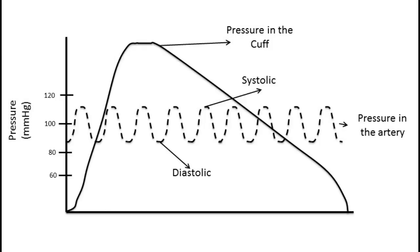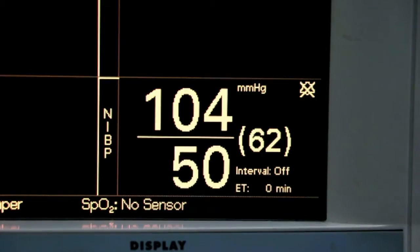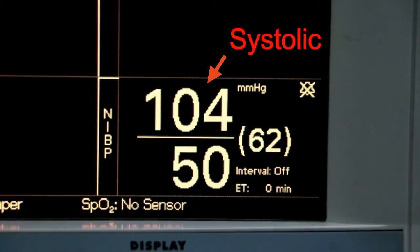Then, once it reaches a pressure below diastolic pressure, it will deflate more rapidly. Finally, it will report the patient's blood pressure on the screen. If the initial inflation pressure does not go above the systolic pressure, the device may try to inflate the cuff again to a higher initial inflation pressure. This should not be interpreted as a malfunction in the device unless it occurs more than two or three times.